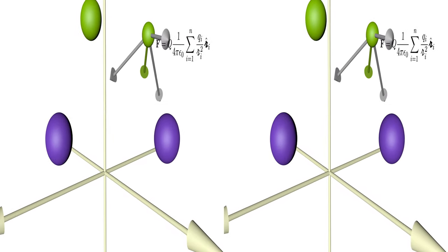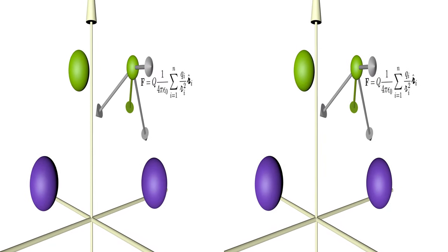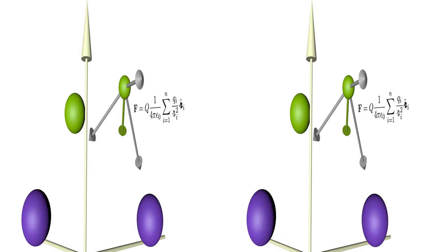When we place multiple point sources in some arrangement, the resulting force on a test charge is the linear combination of all individual sources.